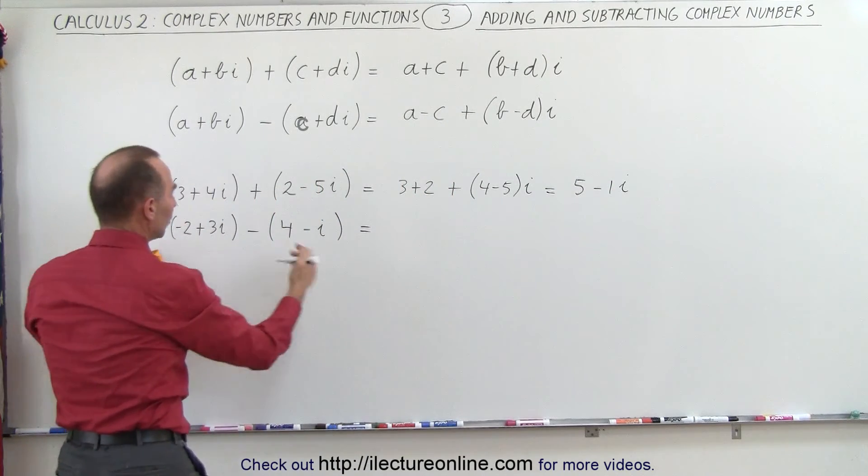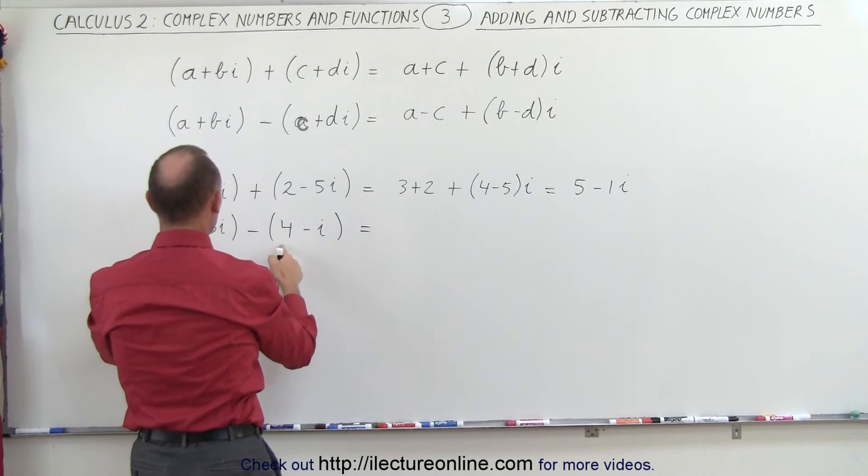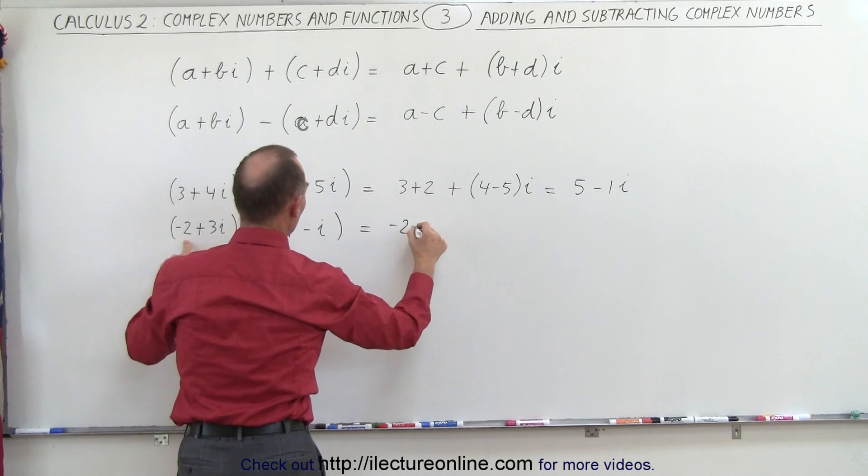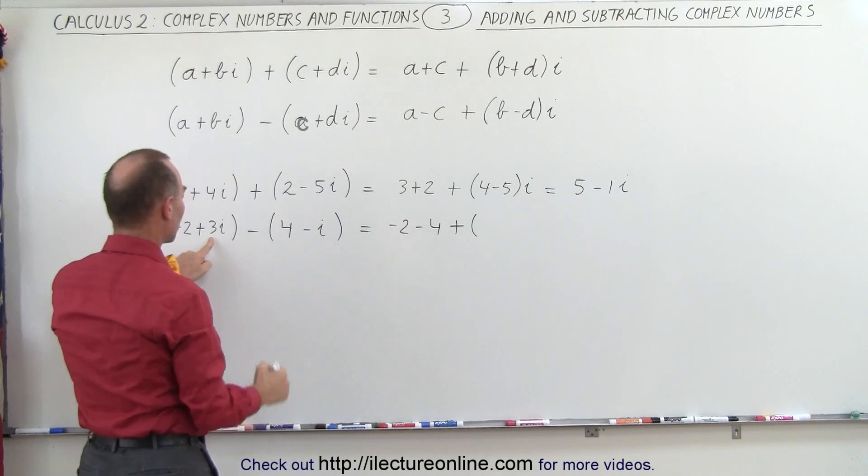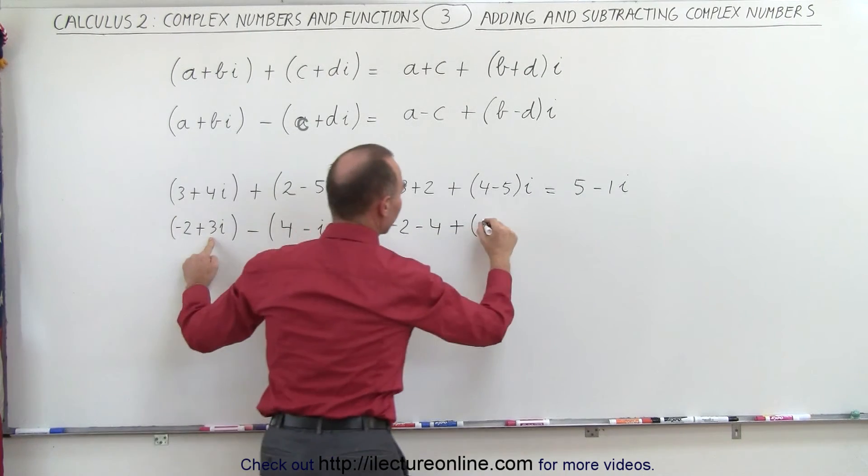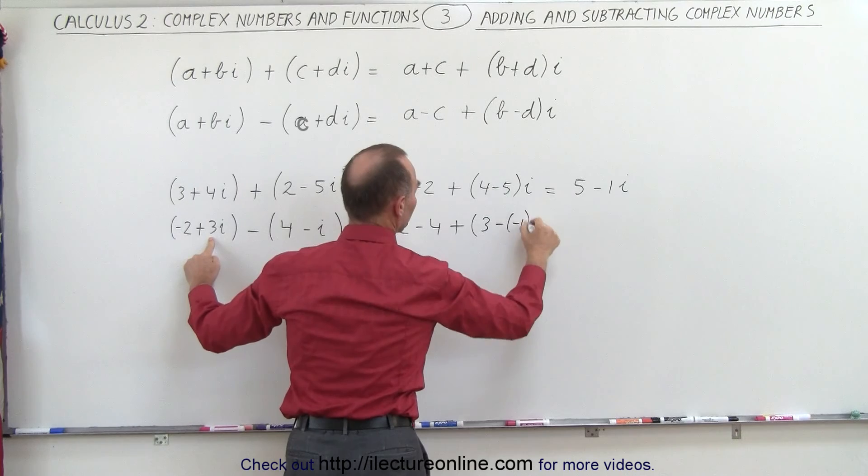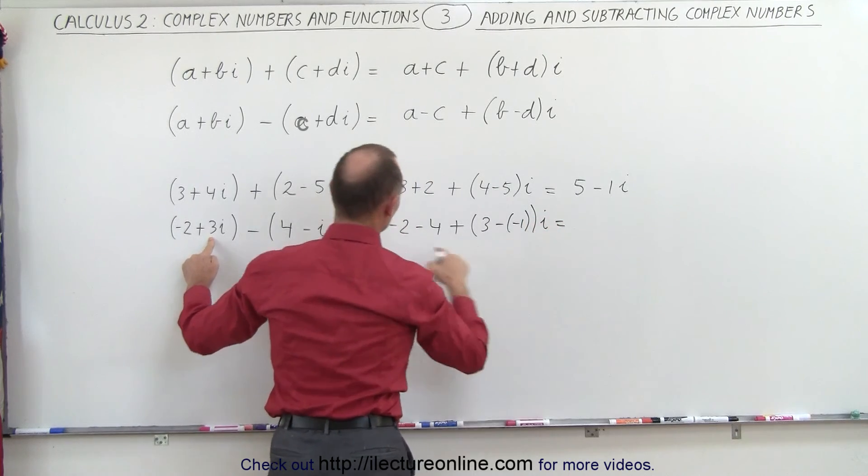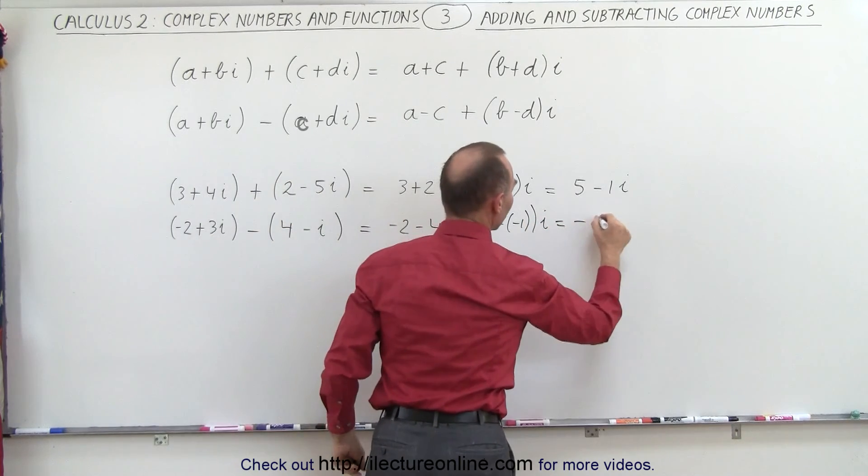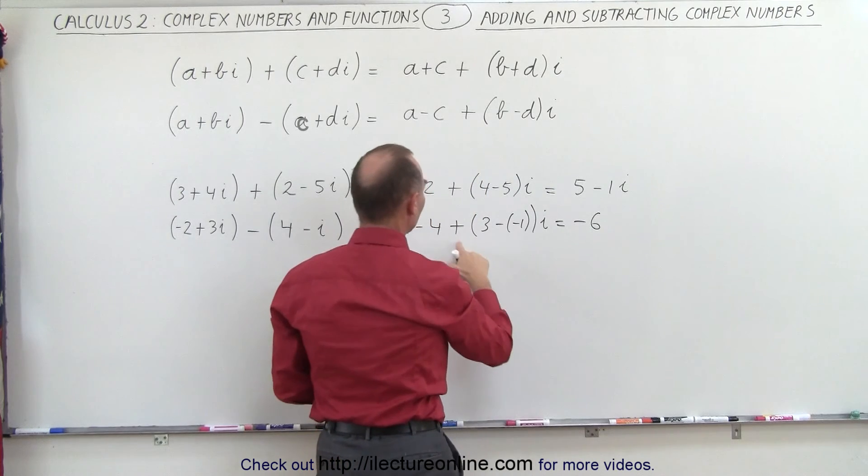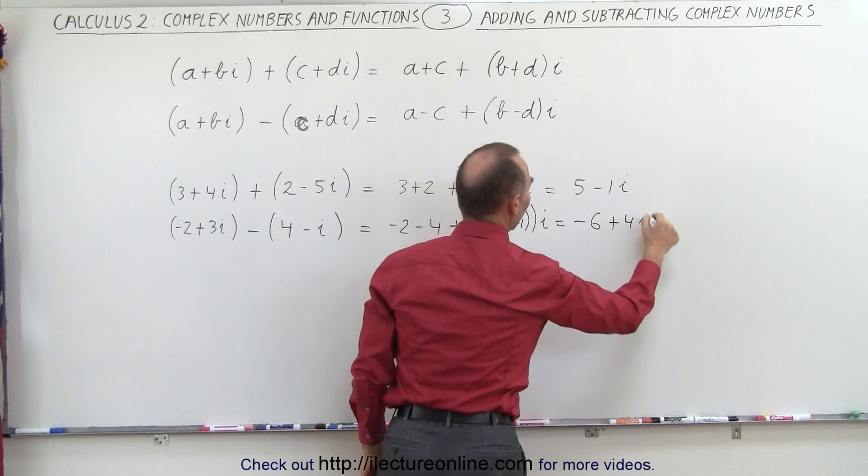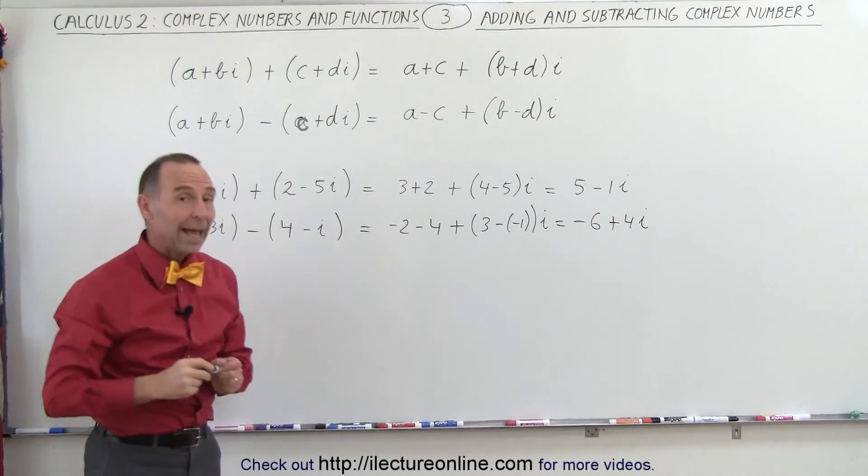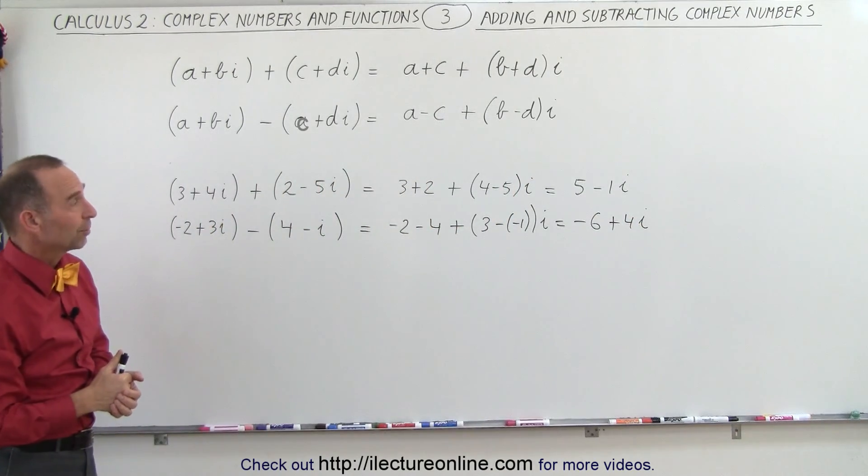And if we subtract, we do the same thing, but in this case, we subtract the real parts, so we get minus 2 minus 4, plus, and here we get 3 minus a minus 1, times i. So minus 2 minus 4, that's minus 6, which is the real part of the difference, and 3 minus a minus 1 becomes 3 plus 1, or plus 4 times i. And so that's how we add and subtract complex numbers.